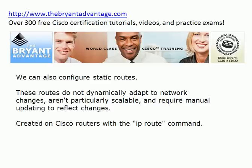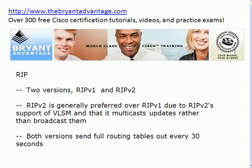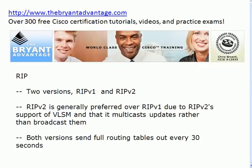You create static routes on Cisco routers with the IP route command. Let's talk about the Routing Information Protocol, RIP. We have two versions: version 1 and version 2. Version 2 is generally preferred in real-world networks. The main reasons are that RIP version 2 supports variable-length subnet masking, and also that RIP version 2 multicasts updates rather than broadcasts them. I've seen some Network Plus 2009 material out there that talks about RIP version 2 being a broadcast protocol, and it is not — it's multicast. And that's a very important distinction.